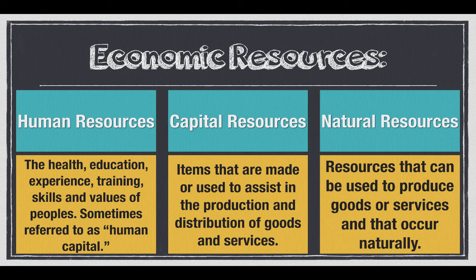Natural resources are resources that can be used to produce goods or services and that occur naturally. It's important to remember that it occurs naturally because it's something I'm not creating. A light bulb is not a natural resource — it's man-made, so it can be a capital resource. But if I had a big window and didn't turn the light on, I'm getting the natural resource of the sun.